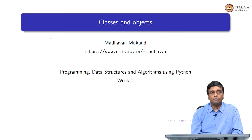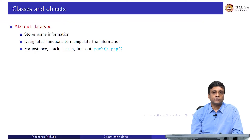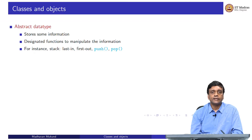Continuing with our discussion of slightly more exotic aspects of Python, let us look at classes and objects. Most often classes and objects arise in the context of what are called abstract data types. We have data types in Python — we have lists, we have dictionaries. When we have a data type, we have certain permitted operations: for a list, you can append to it or combine two lists using plus; with a dictionary, you can create a new entry with a key, update it, extract all the keys and values, and so on.